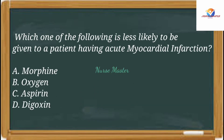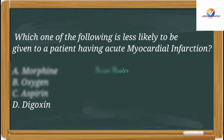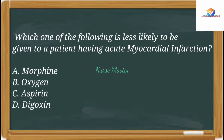Which one of the following is less likely to be given to a patient having acute myocardial infarction? Option A: morphine. Option B: oxygen. Option C: aspirin. Option D: digoxin. The correct answer is option D, digoxin.